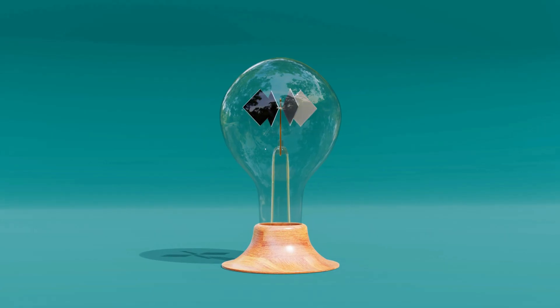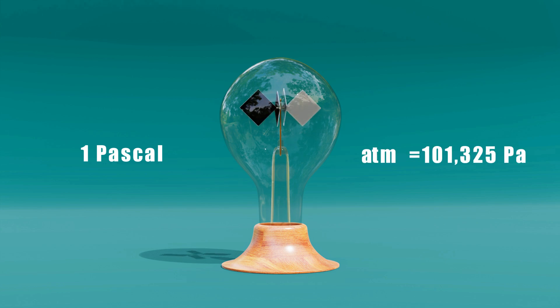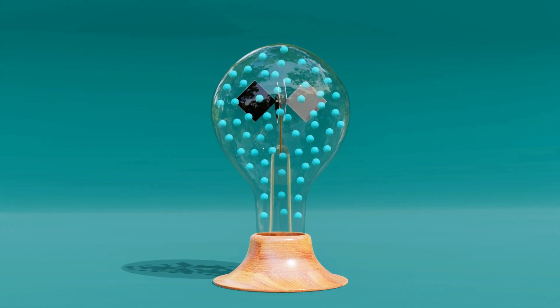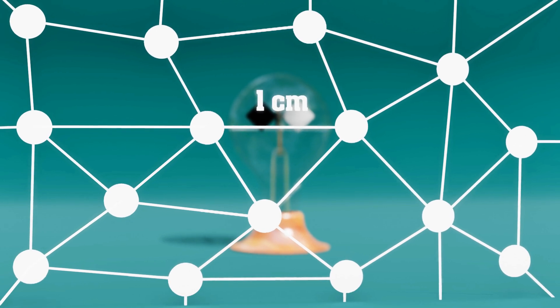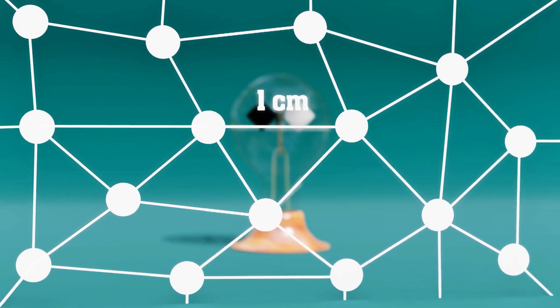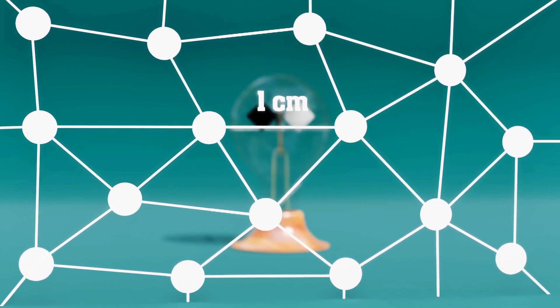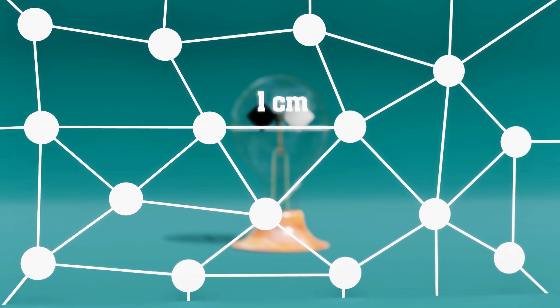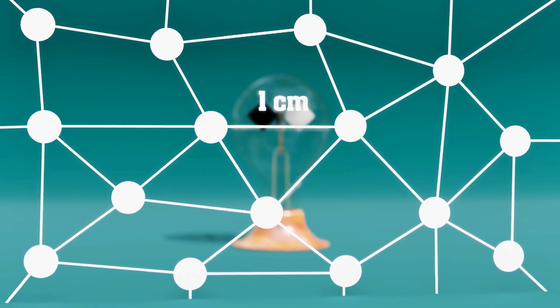Typically, the pressure inside the bulb is kept around 1 pascal, just a tiny fraction of normal atmospheric pressure. If the pressure is too high, the air causes too much resistance and the veins won't spin. If the pressure is too low, there aren't enough gas molecules to generate motion, and again it won't spin. One experiment found that the ideal condition is when a single gas molecule can travel about one centimeter before hitting another. This spacing allows just the right amount of interaction to transfer energy.